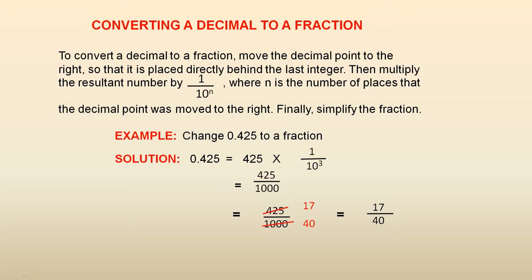Converting a decimal to a fraction. To convert a decimal to a fraction, move the decimal point to the right so that it is placed directly behind the last integer. Then multiply the resultant number by 1 over 10 to the n, where n is the number of places the decimal point was moved to the right. Finally, simplify the fraction.